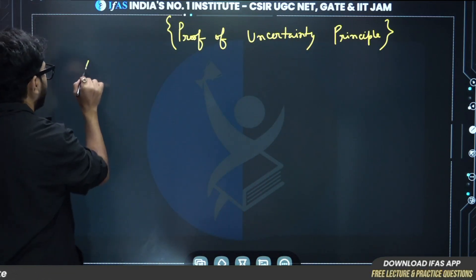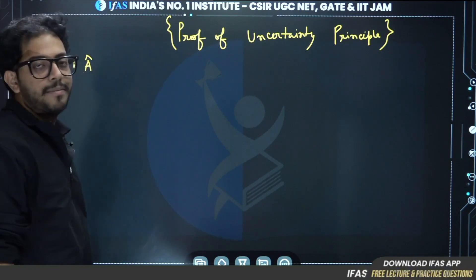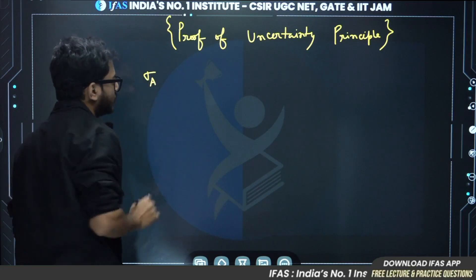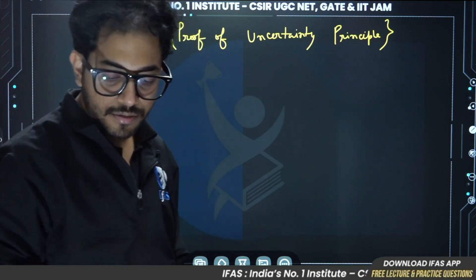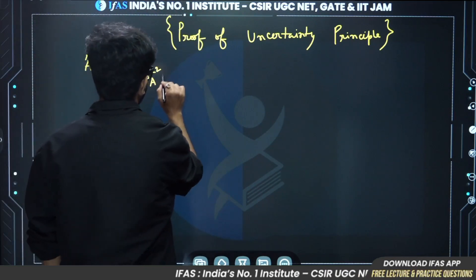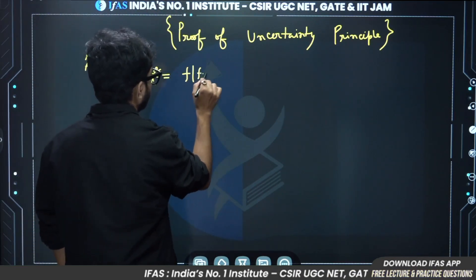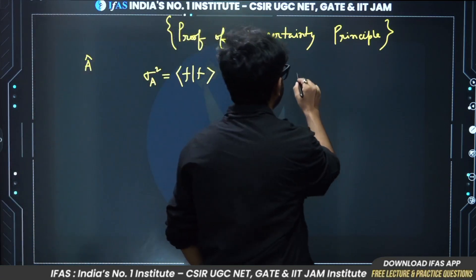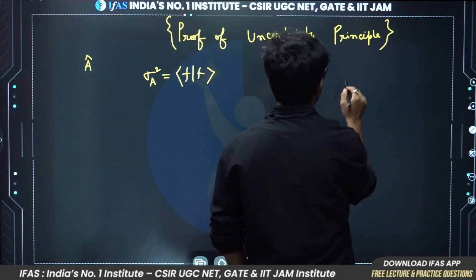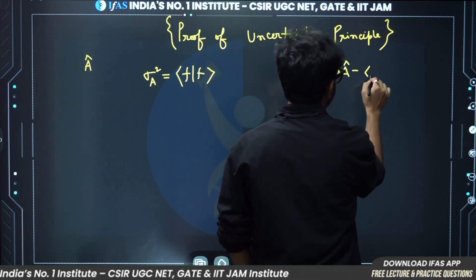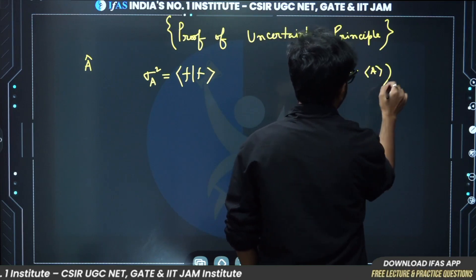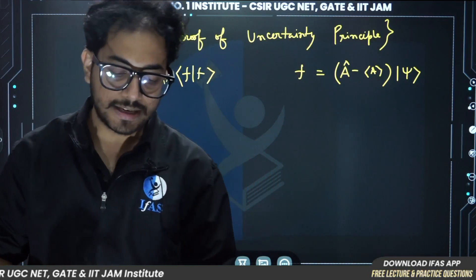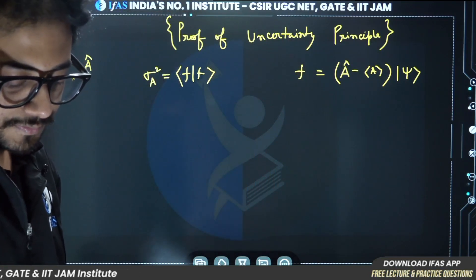Suppose operator A-cap is a Hermitian operator. Then sigma_A squared is the inner product ⟨f|f⟩, where f is defined as: f equals (Â minus expectation value of A) operating on psi.